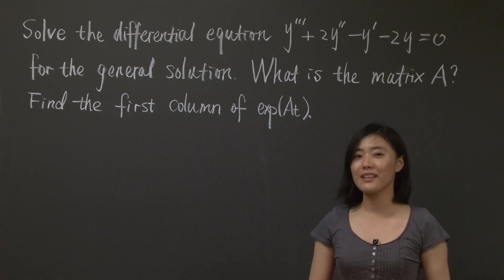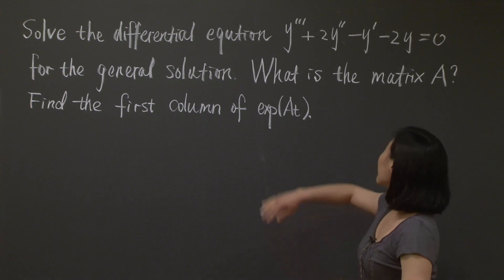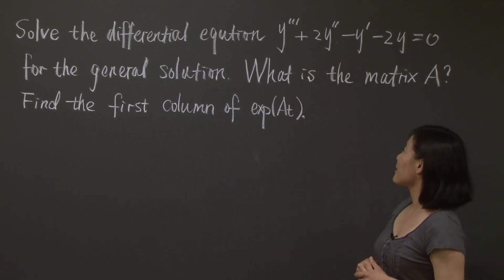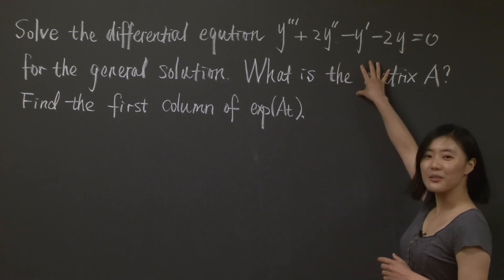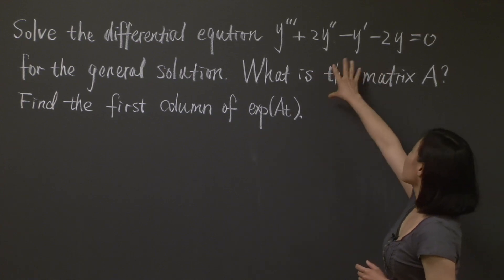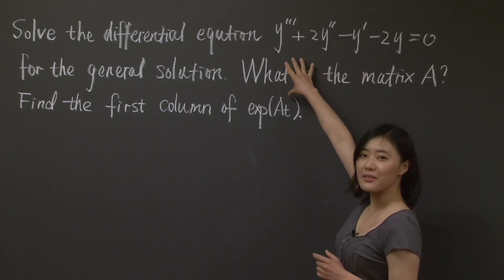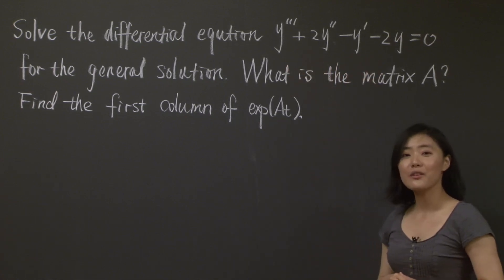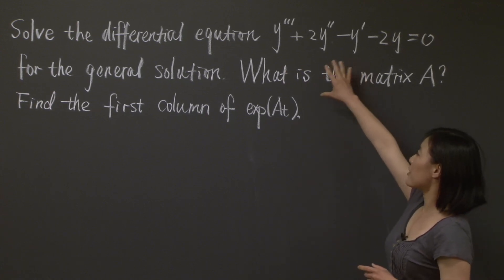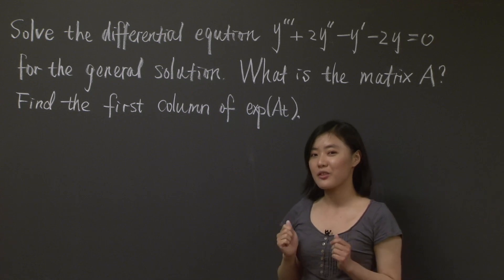A typical example is like what I've written on the board here. y is a function of t, and y and its derivatives satisfy this equation. As you can see, it involves y, y prime, and all the way to its third derivative. So our first goal is to solve this differential equation for its general solution using the method of matrix.